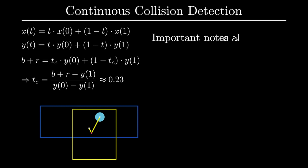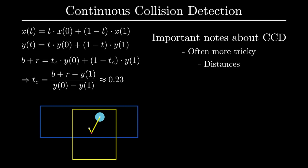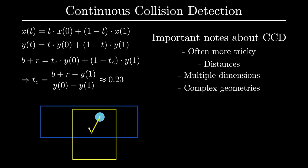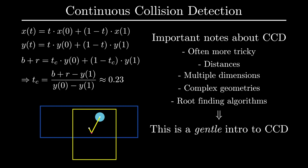In practice, however, continuous collision detection can become fairly complex. A lot of times, it's not as simple as solving a linear equation — you're often dealing with distances, multiple dimensions, and more complicated geometries, which requires more sophisticated root-finding algorithms that can become much more computationally intensive if you aren't careful. There are entire chapters of books dedicated to this, so the goal here is just to give you an overview of the basic principles.